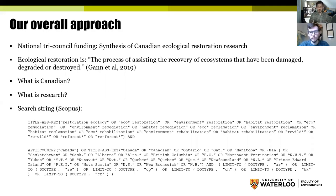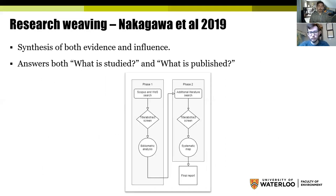The third question was what counts as research. We were interested in both peer-reviewed and grey literature — restoration is a practice and a lot of it is documented in the grey literature, so we included searches in the systematic map portion that captured some of that. Our overall approach was one called research weaving, documented by Nakagawa et al. 2019, which answers both what is studied and what is published. Phase one looked at what is published through a bibliometric analysis — a very wide search of everything published on Canadian ecological restoration. Phase two was a more narrow systematic map that looked at outcomes of ecological interventions, and we combined both to produce our report.